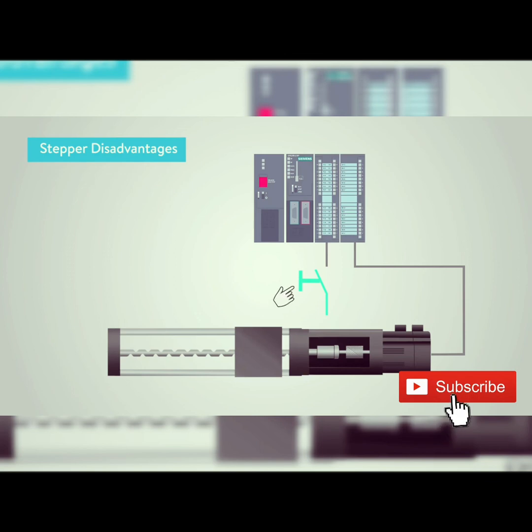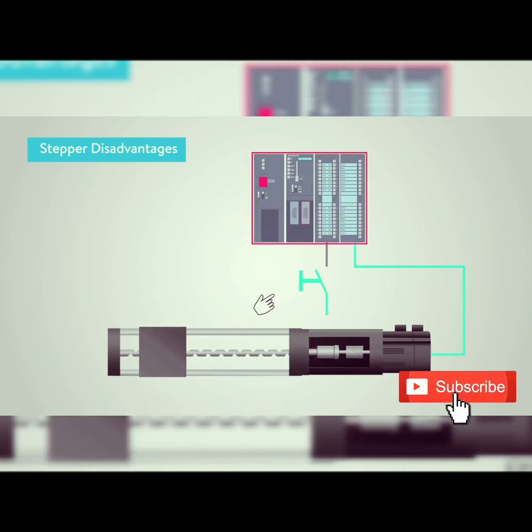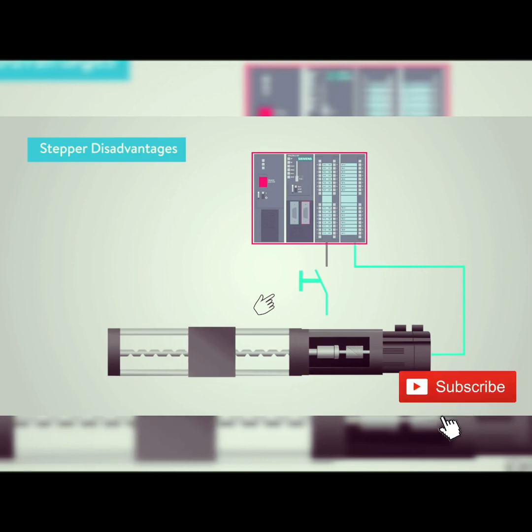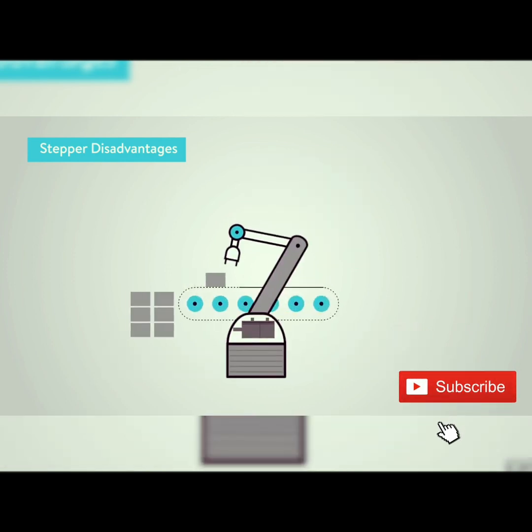And while speaking of open loop systems, a drawback of open loop control using steppers is that if the machine load is too high or the motor attempts to move too quickly, then positional steps may be skipped. The controller has no means of detecting this, and so the machine continues to run slightly out of adjustment until the position is reset. For this reason, more complex robots and machine tools will utilize servo motors that incorporate encoders and closed loop controllers.